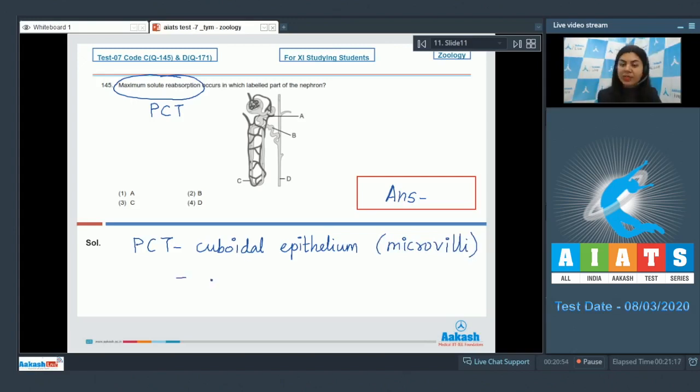This cuboidal epithelium has microvilli giving it a brush border appearance, which increases the absorptive surface area. PCT brings about maximum absorption because it is permeable to nearly all substances present in the glomerular filtrate.